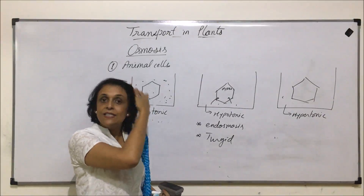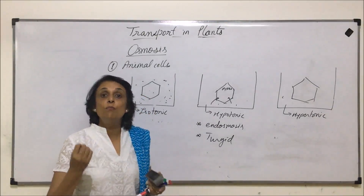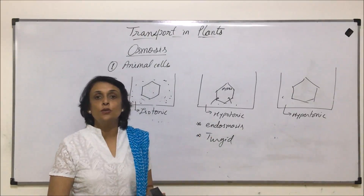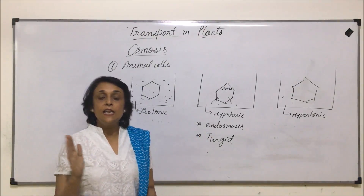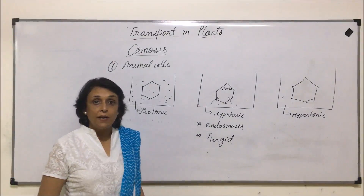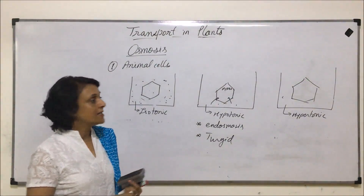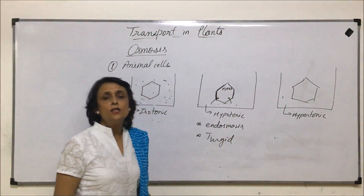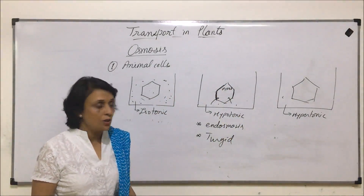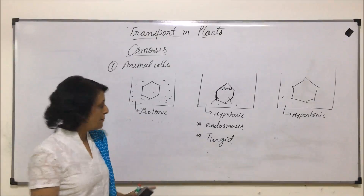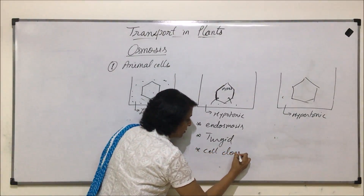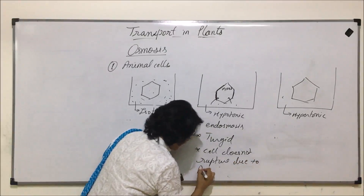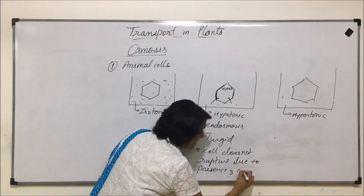In case of animal cell, we said it becomes turgid, enlarges and ultimately bursts. Here for the plant cell, it becomes turgid — the water which has gone in has started exerting pressure on the wall. But the cell wall exerts equal pressure on it and it is a rigid membrane. So there is a slight change in the cell structure — it might just become a little bulgy, slightly — but there is no significant detectable change. The cell becomes turgid but it will not rupture, due to the presence of the rigid cell wall.